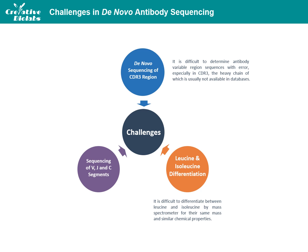The third challenge is the sequencing of V, J, and C segments. The V, J, and C gene segments of antibodies are available in public databases. However, during the maturation of an antibody, the B cell introduces hypermutations into the sequence to optimize the affinity.